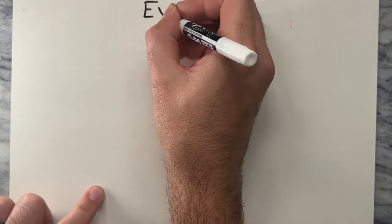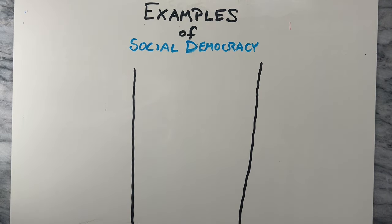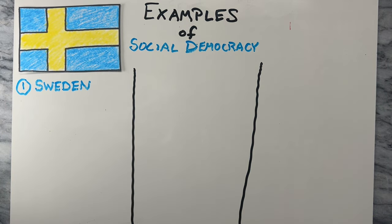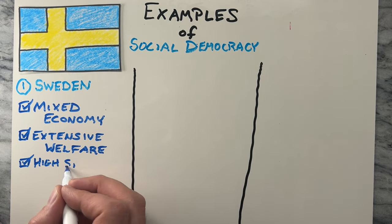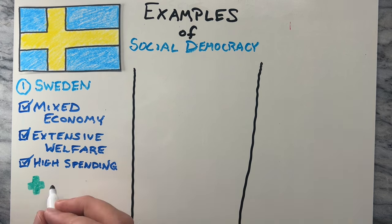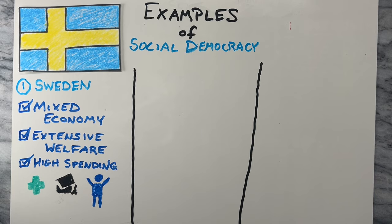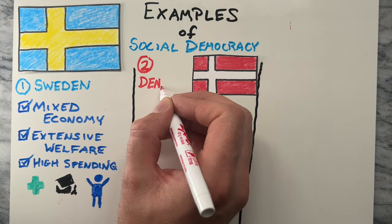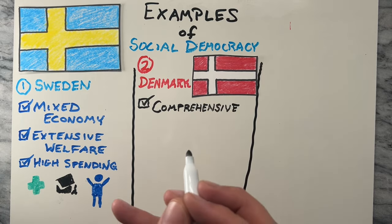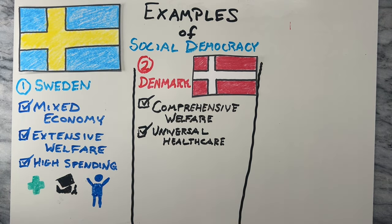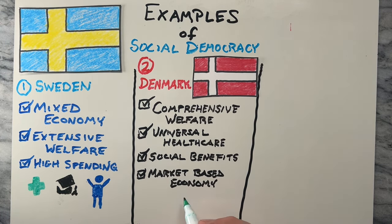Lastly, let's take a look at three countries often considered as social democracies. Sweden is frequently cited as a prime example of a social democracy. It has a mixed market economy with extensive welfare programs, high levels of public spending on health care, education, and social services, and a strong emphasis on social equality. Denmark is another prominent social democracy known for its comprehensive welfare system, universal health care, and generous social benefits. It combines a market economy with a high degree of social protection and income redistribution.